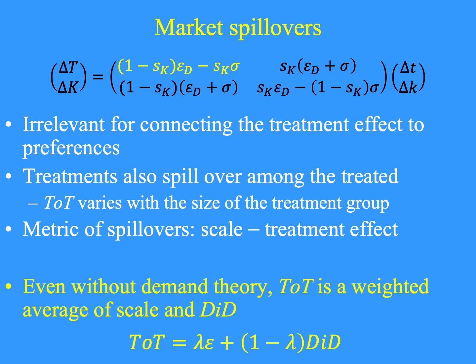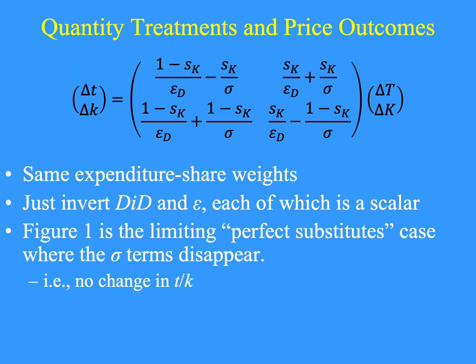Most of this can be done without demand theory or without maximization. The outcomes do not have to be prices or quantities; the treatments do not have to be prices or quantities. We could be talking about mortality, test scores, or any number of other things. The only assumption needed is that T and K are comparable in that treating them both equally will not affect the gap between their outcomes. We looked at quantity outcomes from price treatments. To have price outcomes from quantity treatments, which is more like figure one, invert the treatment effects matrix. The algebra of this inversion is clean due to the Hicks-Marshall structure. The weights stay the same; we just replace epsilon with its reciprocal and sigma with its reciprocal.